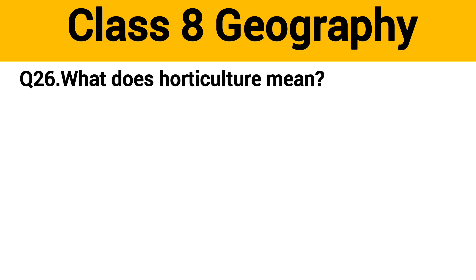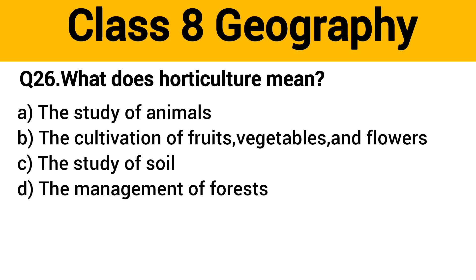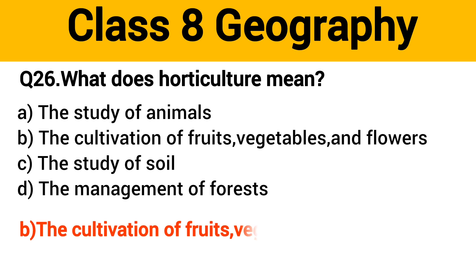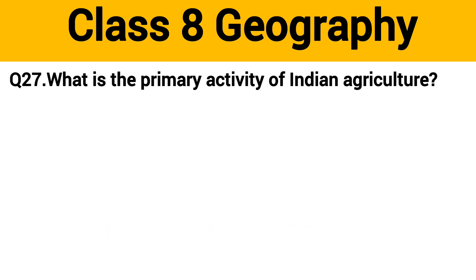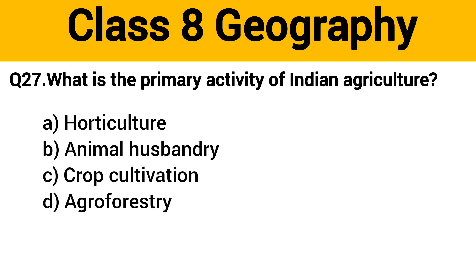Question number 26: What does horticulture mean? The right answer is option B: the cultivation of fruits, vegetables and flowers. Question number 27: What is the primary activity of Indian agriculture? The right answer is option C: crop cultivation.